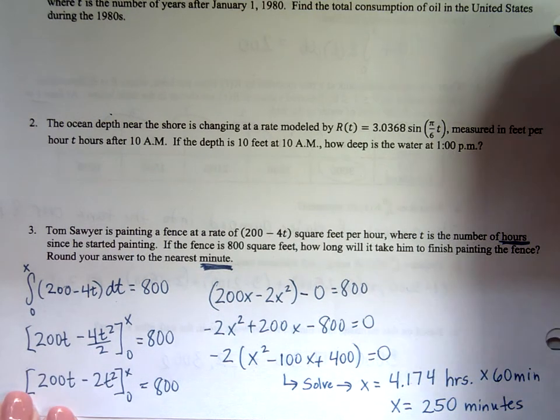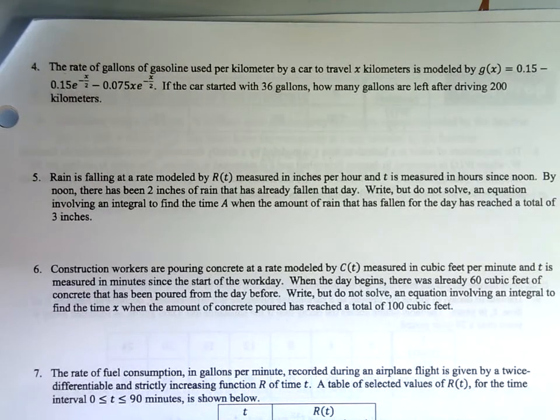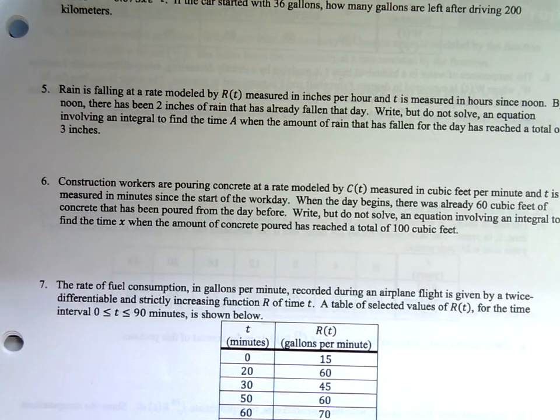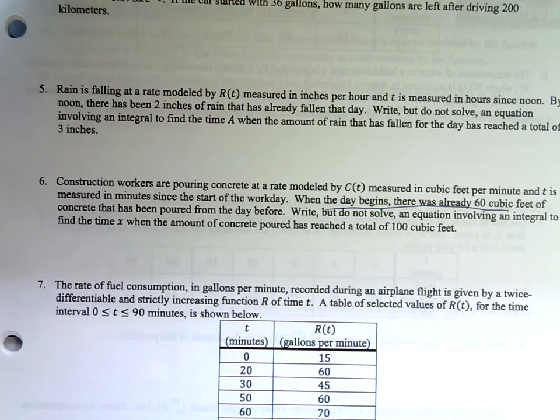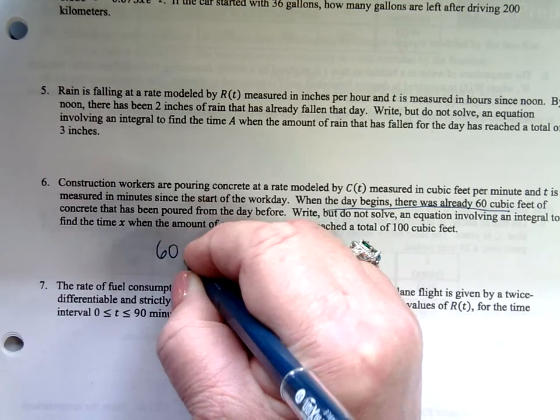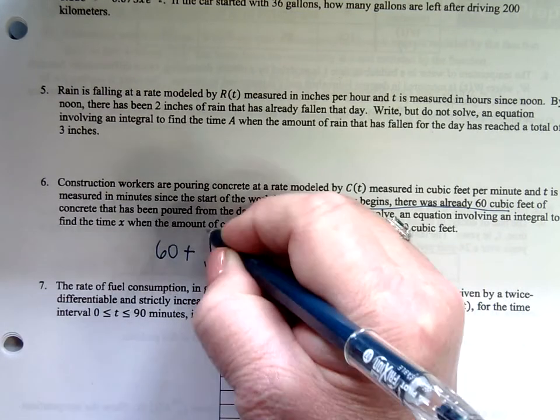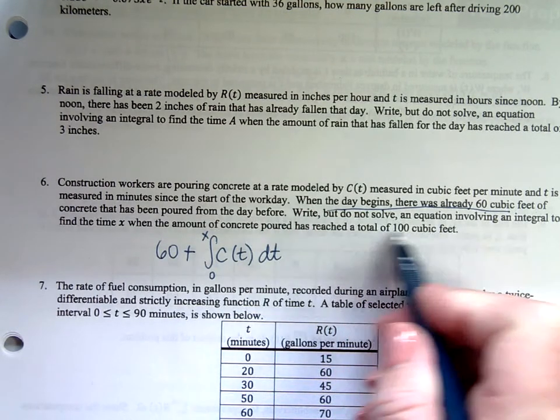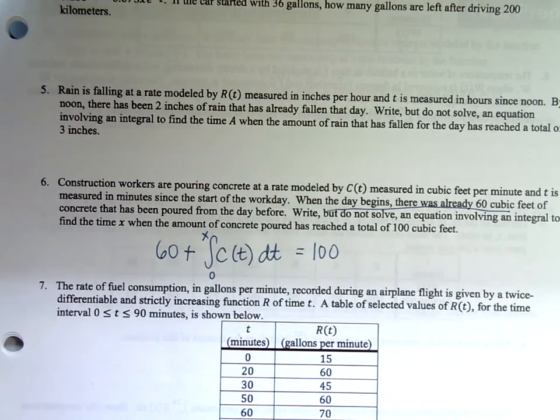Number six. Construction workers are pouring concrete at a rate modeled by C of T, measured in cubic feet per minute. When the day begins, there are 60 cubic feet of concrete that's been poured from the day before. Write, but do not solve, an equation involving the integral to find the time x when the amount of concrete poured has reached 100 cubic feet. It starts with 60 cubic feet, and I'm adding to it. 60 plus the integral from 0 to x of C of T dT equals 100. You're just setting it up, not solving it.